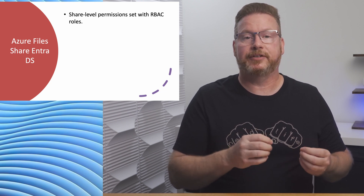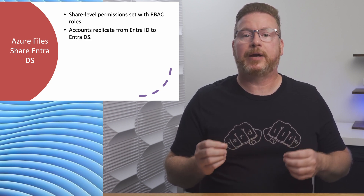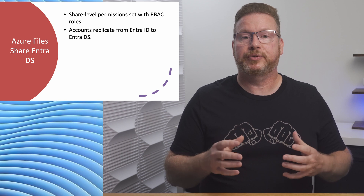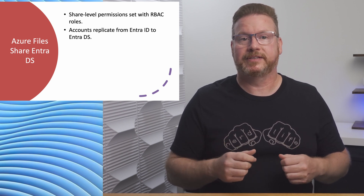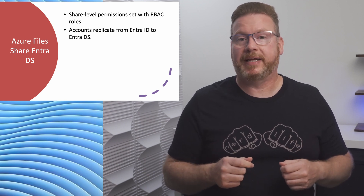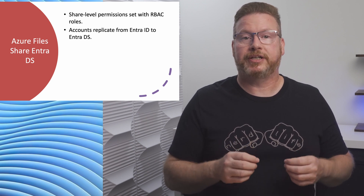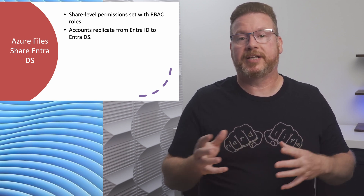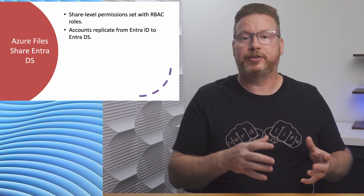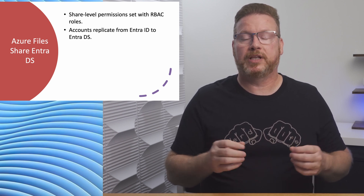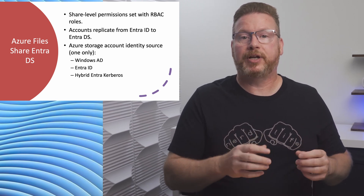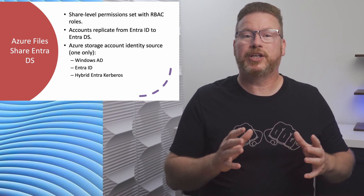We can only assign share-level permissions using RBAC roles in Azure, so those accounts must exist in Entra ID. Users created in Entra DS do not replicate back to Entra ID. That means user accounts must be sourced from Entra ID to use an Azure file share in Entra Domain Services. We can only assign NTFS permissions on accounts that exist in Entra Domain Services, so be sure any account granted share-level RBAC role permissions is also replicated to Entra Domain Services. Hybrid accounts replicated from Windows AD to Entra ID with Entra Connect Sync, then to Entra Domain Services, will also work.